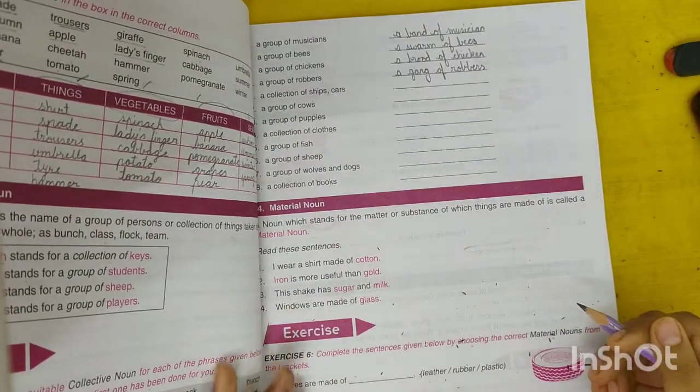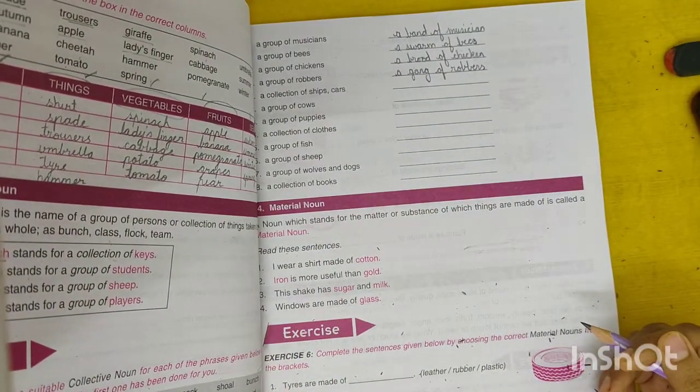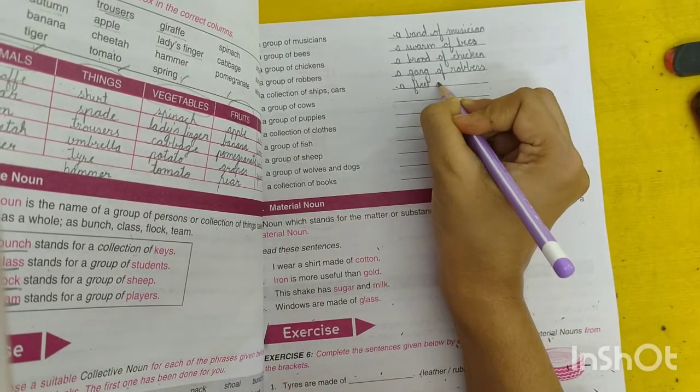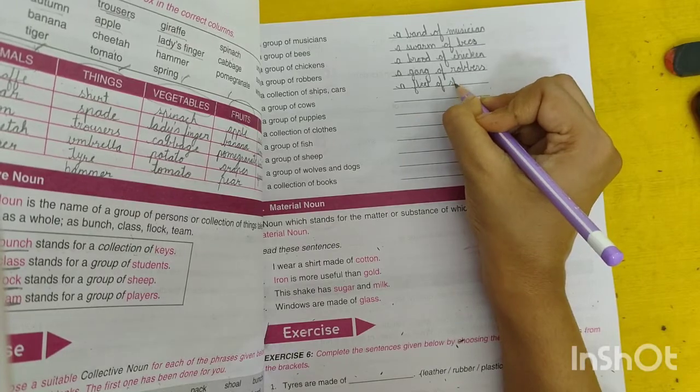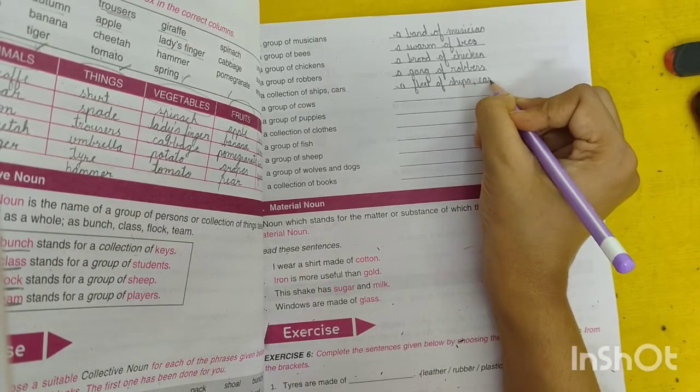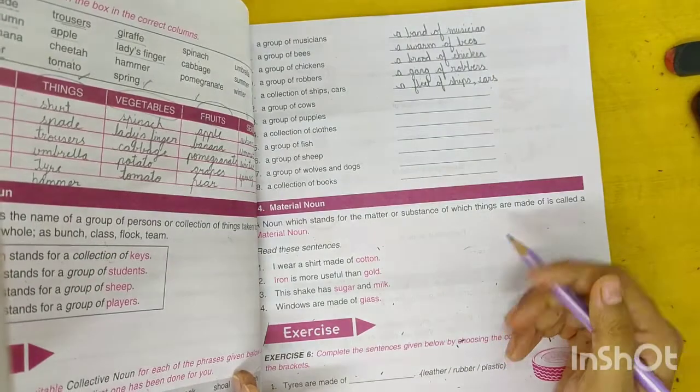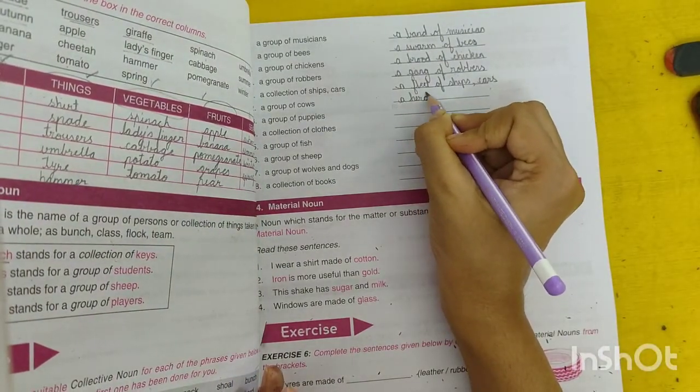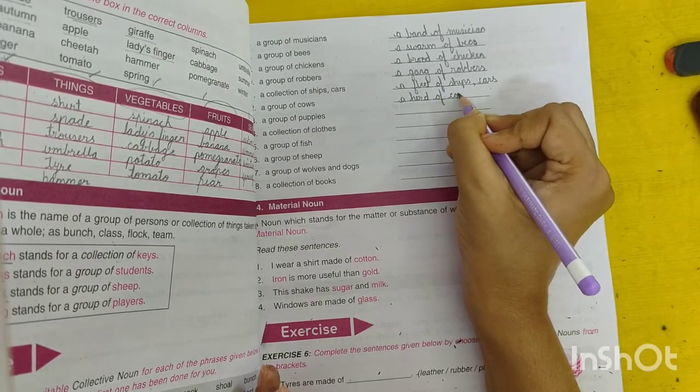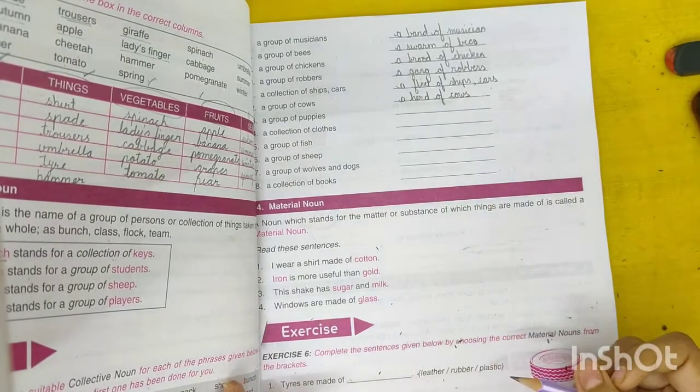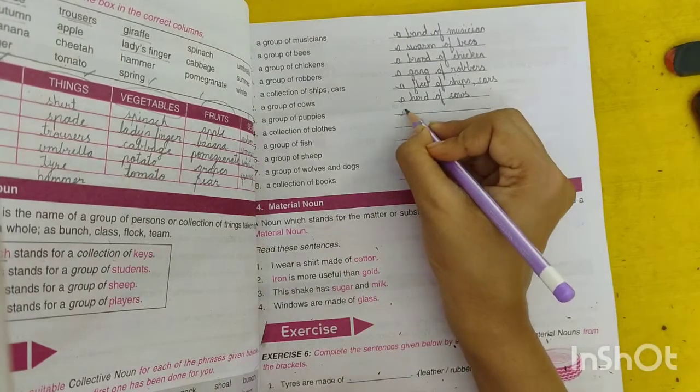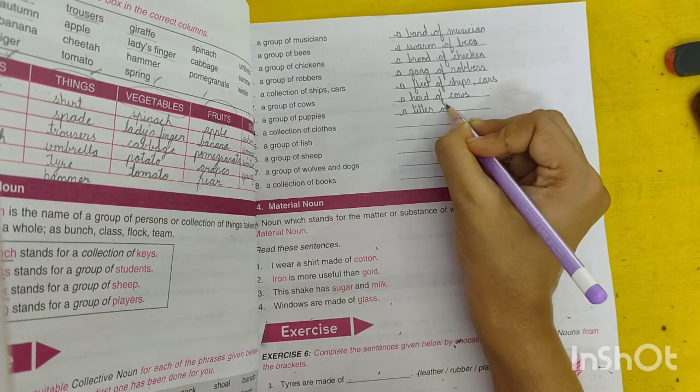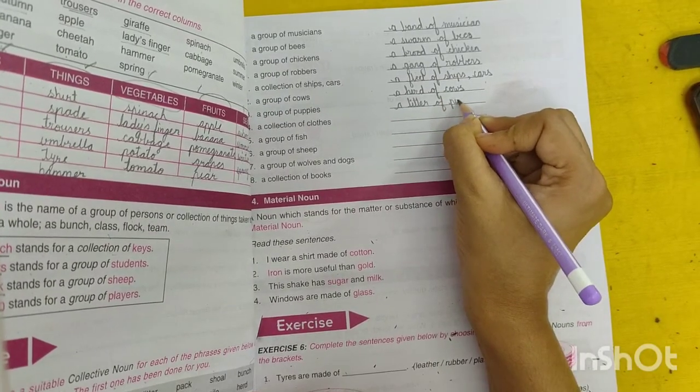A collection of ships, a fleet of ships. A group of cows, a herd of cows. A group of puppies, a litter of puppies.